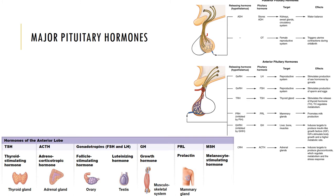Growth hormone (GH) stimulates cell growth and reproduction by accelerating the rate of protein synthesis, particularly in skeletal muscle and bone, regulated by growth hormone releasing hormone and growth hormone inhibiting hormone from the hypothalamus. Prolactin (PRL) works with other hormones to stimulate mammary gland development and the production of milk during pregnancy and nursing, regulated by prolactin releasing hormones and prolactin inhibiting hormone. Melanocyte stimulating hormone (MSH) stimulates melanocytes of the skin to increase their production of melanin.